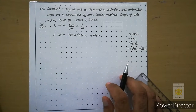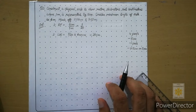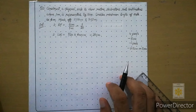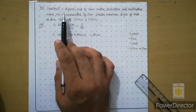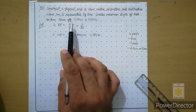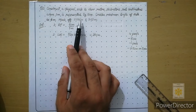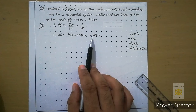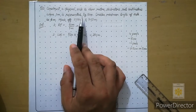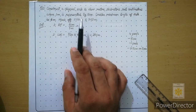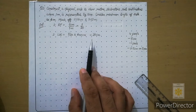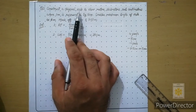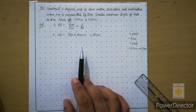Welcome to another lecture on engineering graphics. The motive of this lecture is to learn how to present our work on the grid sheet for diagonal scale and how to construct a diagonal scale. In the previous lecture we discussed how to find RF for this question and how to find its LOS, then we learned its solution in detail. In this lecture I will only talk about the presentation on the grid sheet and the construction of the diagonal scale.